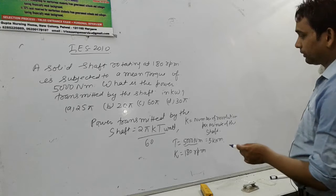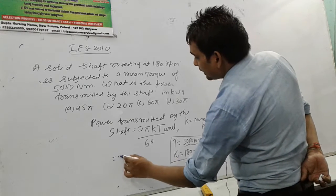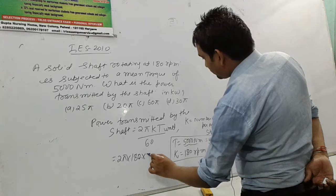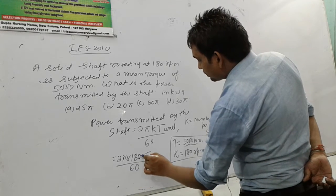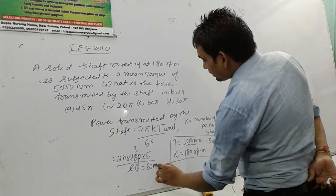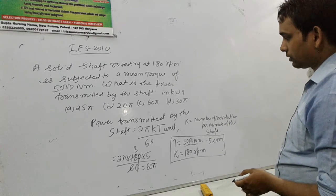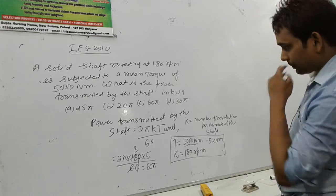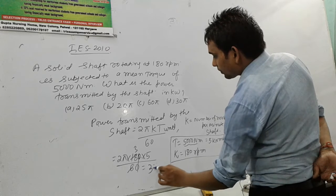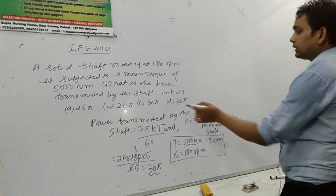Now we substitute the values in the given formula. So 2π and the value of N is 180 and the value of T is 5 divided by 60. This will be 60π divided by 2, which gives us 30π. So it will be equal to 30π. 30π is the answer of this question.